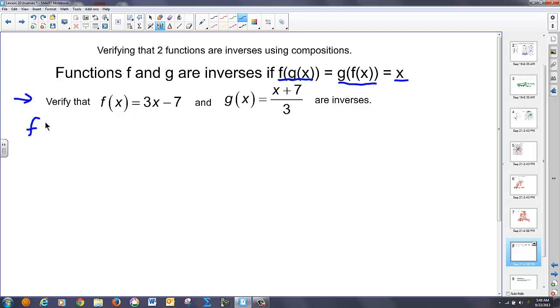So let's first do f of g of x, which is basically f of x plus 7 over 3. So I have 3 times x plus 7 over 3 minus 7. And the 3's reduce, that's x plus 7 minus 7, which is equal to x. So far, so good with the first one.